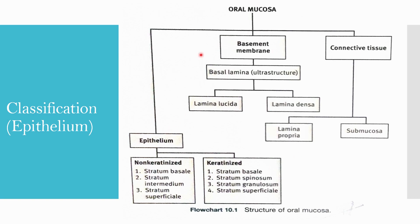Here is the whole classification chart. You have to make this in your exams — if the classification of oral mucous membrane comes up, you will get good marks for these flow charts. It covers the epithelium (non-keratinized and keratinized with their histological layers), basement membrane (basal lamina with lamina lucida and densa), connective tissue lamina propria, and submucosa.